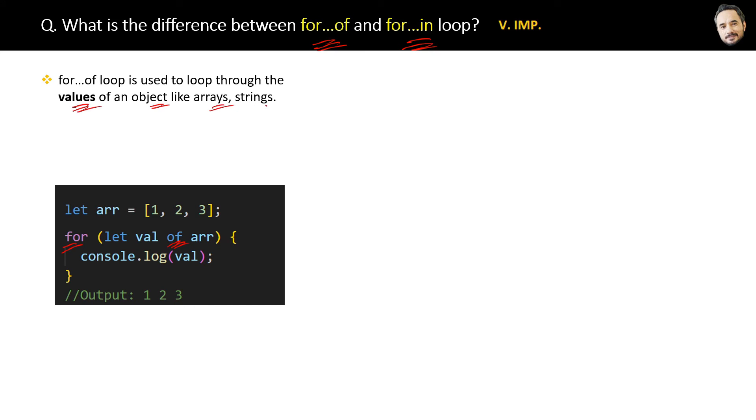For...of loop works with arrays and strings. It allows you to access each value directly without having to use an index - no index is required. Now if you see the code for the for...in loop.